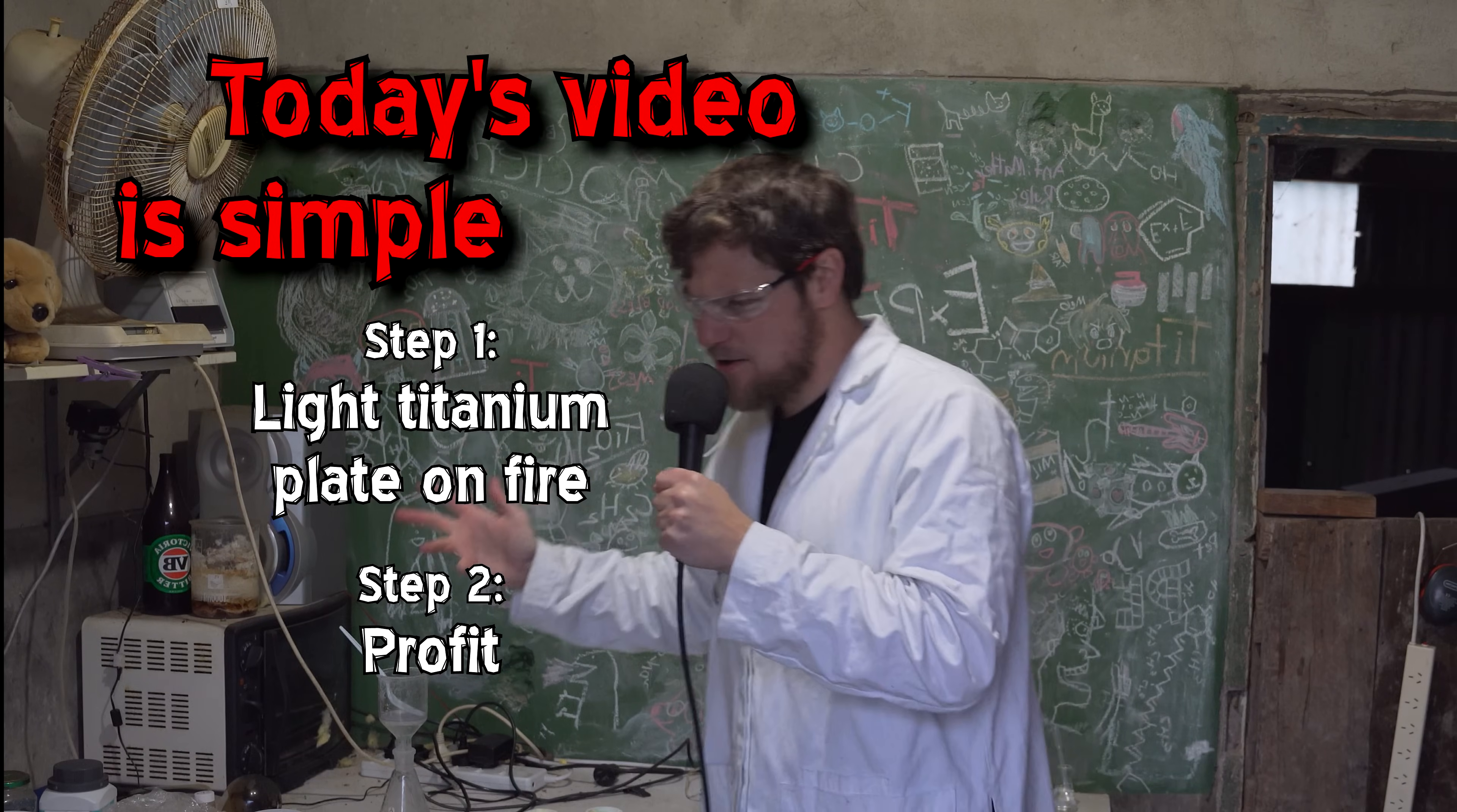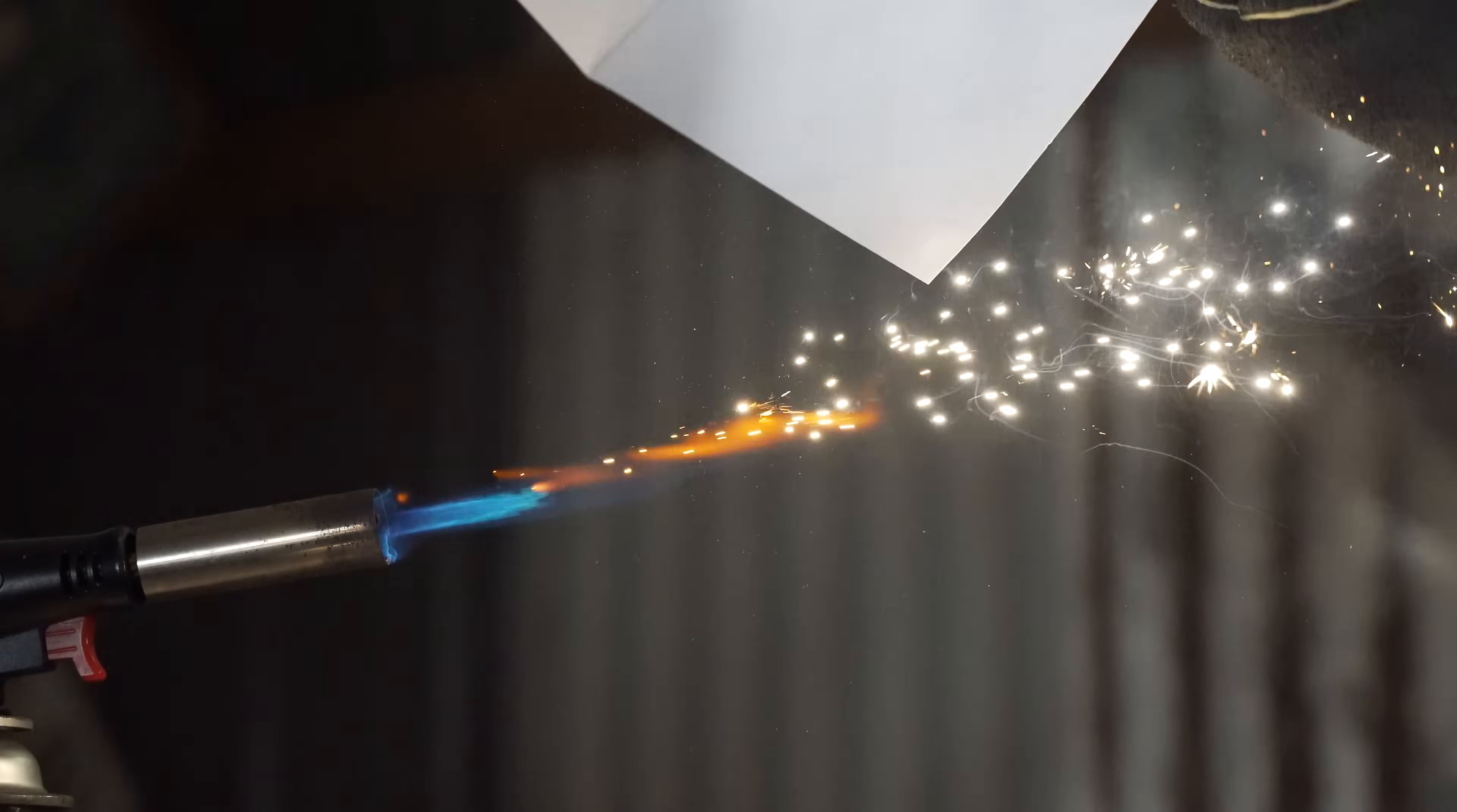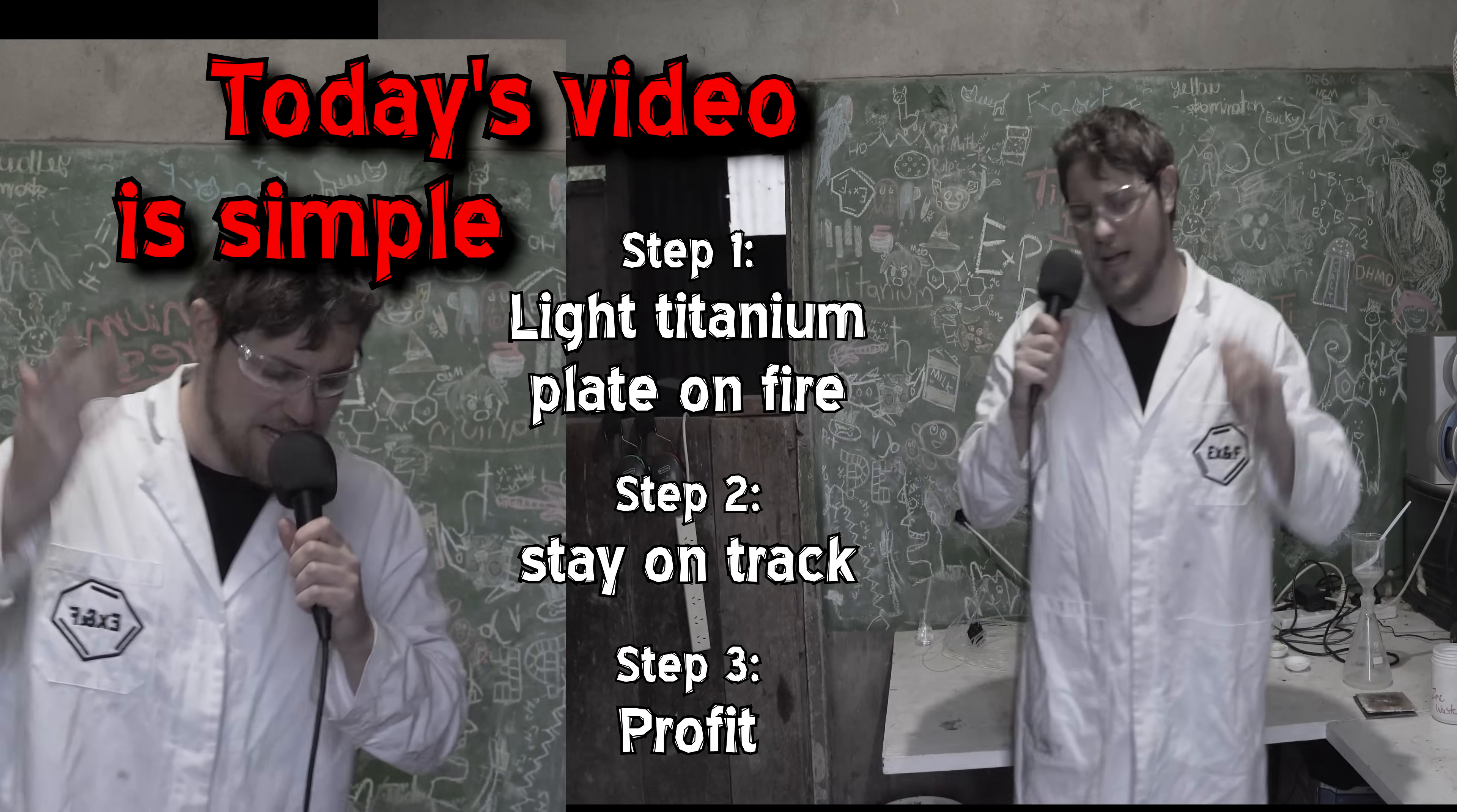I read a lot of comments on the last video talking about things we could try. There were a lot of comments about taking the titanium plate, turning it into powder, and then lighting that powder on fire. Yes, titanium powder is flammable, but that defeats the point. If we take the plate and turn it into powder, we're just lighting the powder on fire. Is this being pedantic? I'm getting off track already. We've got a simple goal this video and I'm already getting off track. We're staying on track.